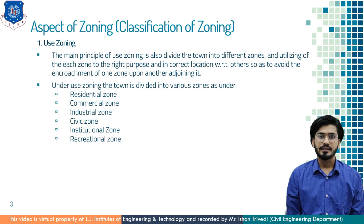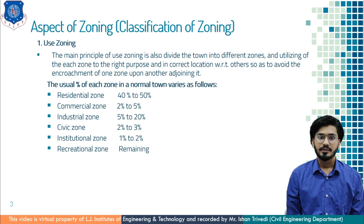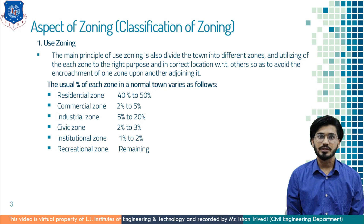The town is divided into various zones: residential zone, commercial zone, industrial zone, civic zone, institutional zone and recreational zone. In a normal town, the residential zone acquires 40% to 50% of land, commercial zone 2% to 5%, industrial zone 5% to 20%, civic zone 2% to 3%, and institutional zone 1% to 2%.